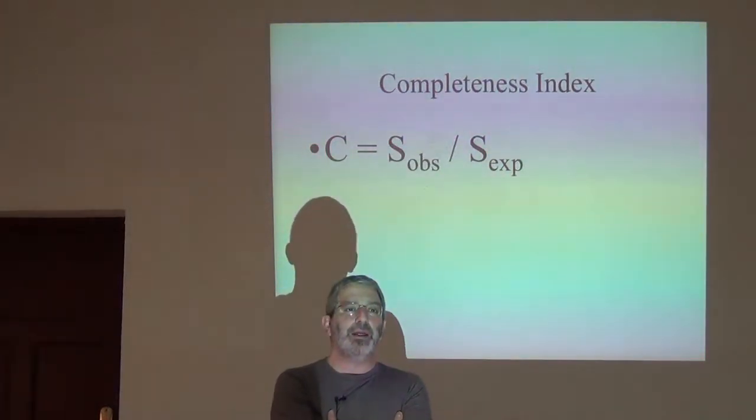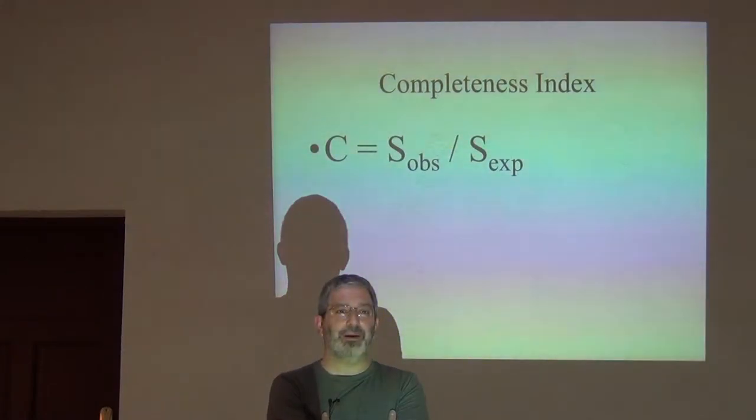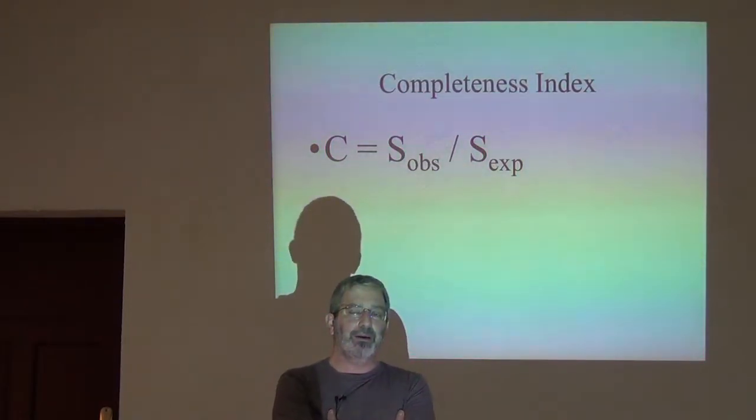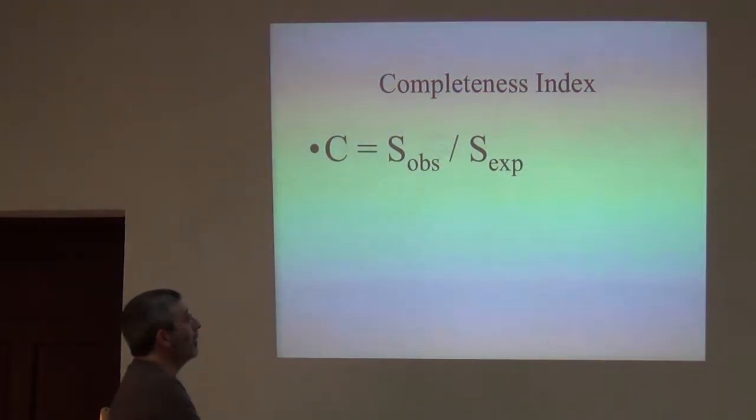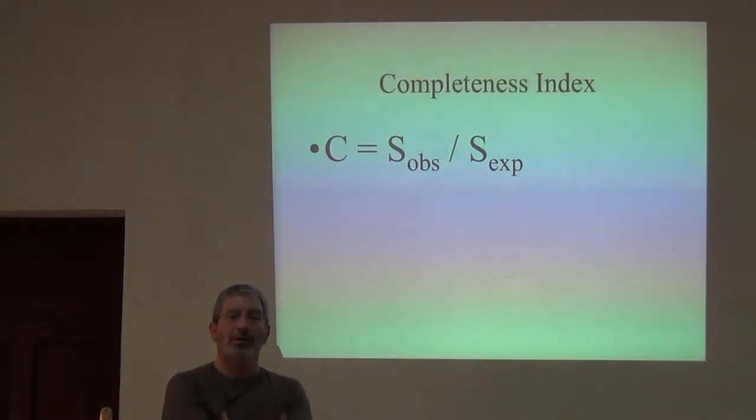We calculated that just under two species are probably out there still to be sampled if we kept sampling in that environment. So a kind of last step in all of this is that we can calculate an index of completeness, and it's a silly little index.